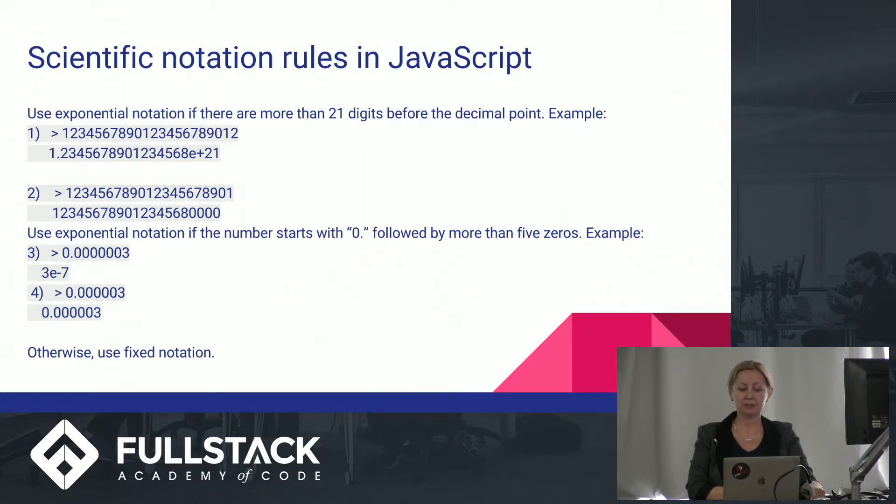And JavaScript also displays number in scientific notation if the number starts with zero followed by more than five zeros. And that is illustrated by examples three and four.